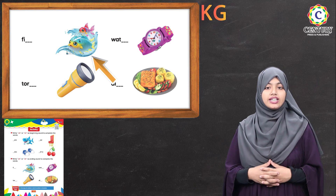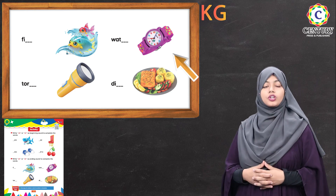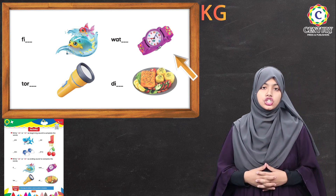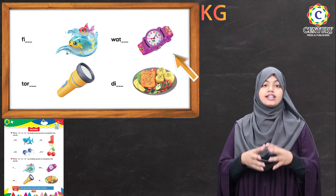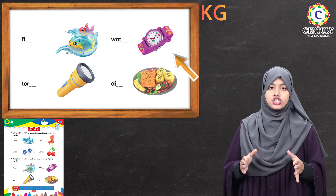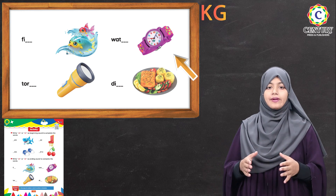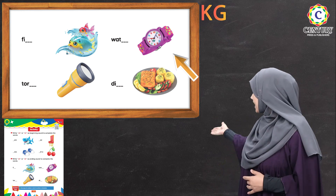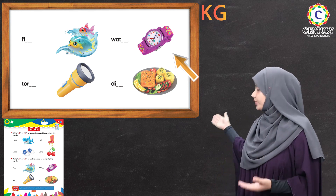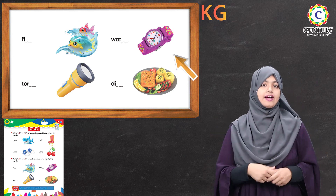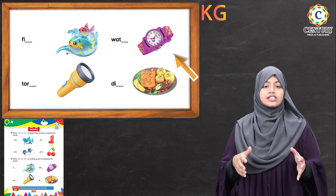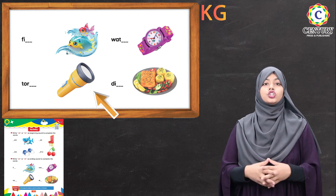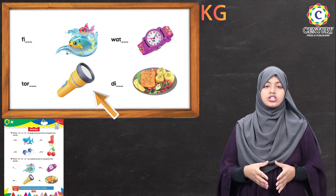The next one is 'watch.' Watch. It's C-H. So you have to write C-H to complete this word. The next sound is 'torch.'